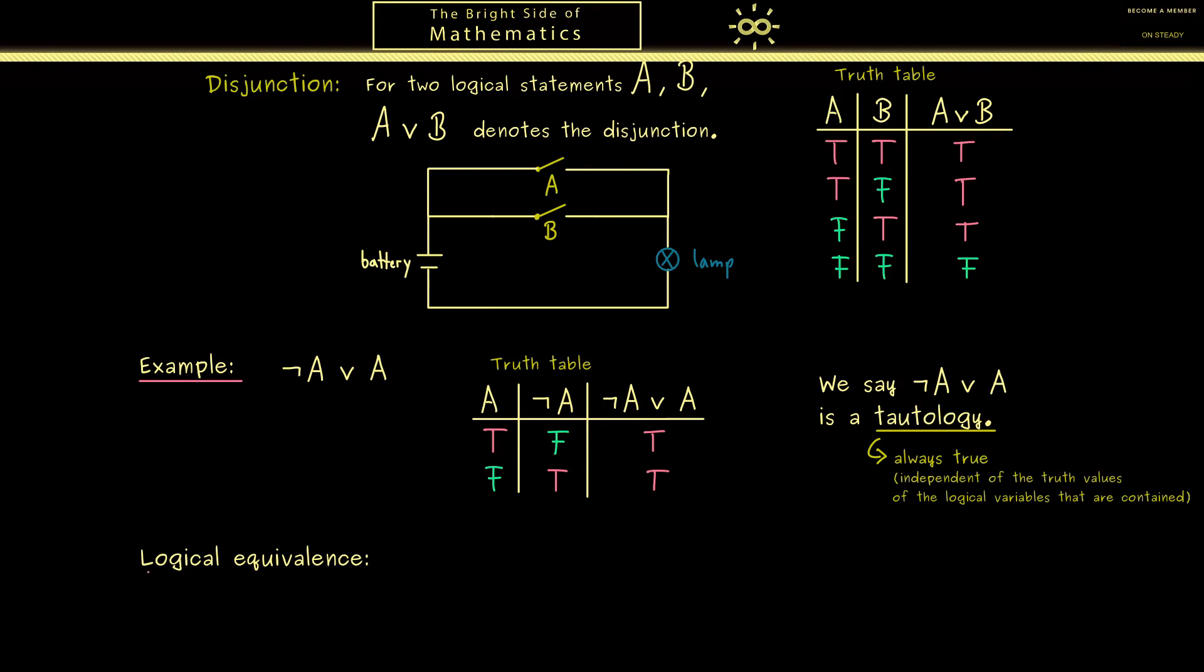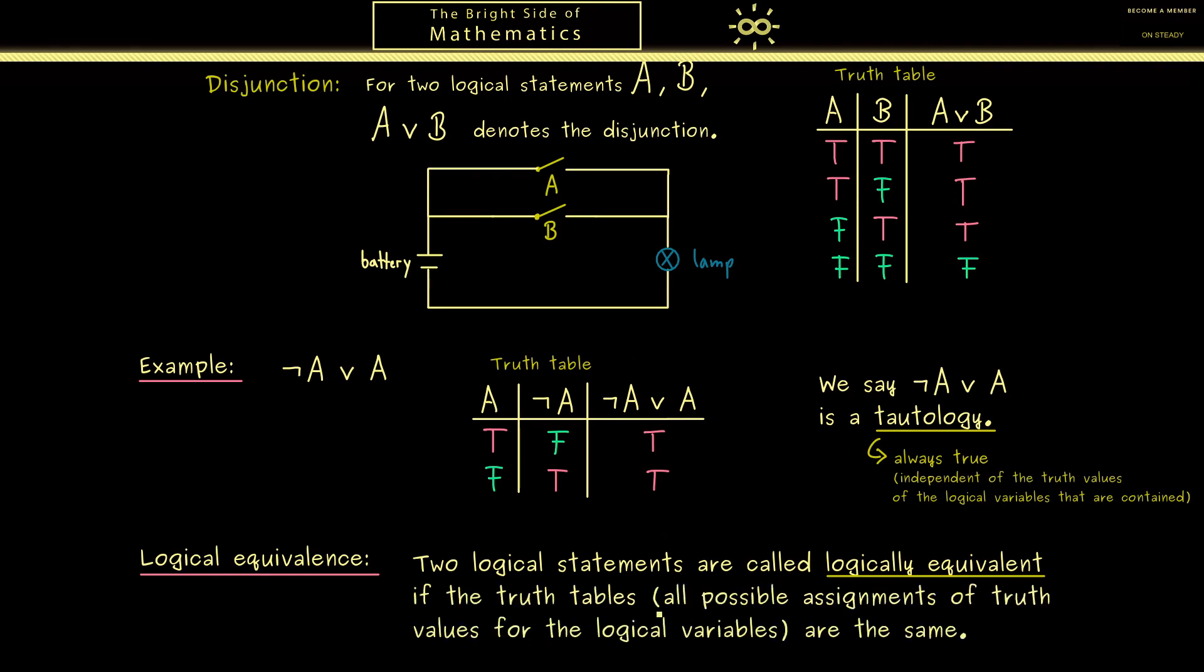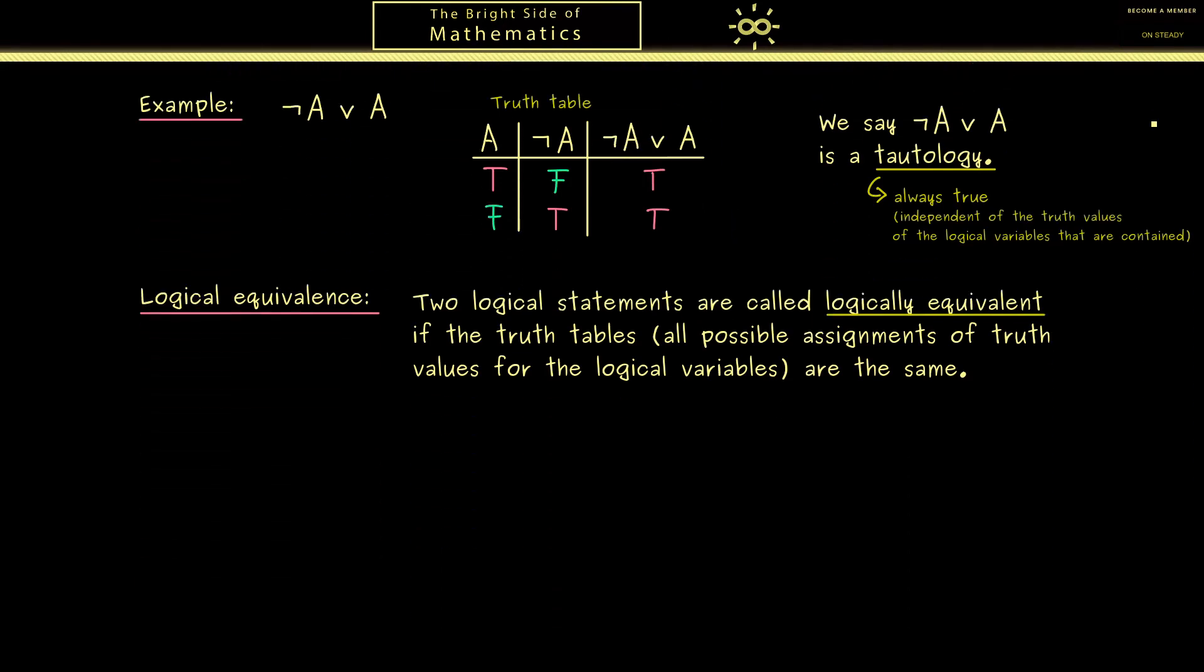Related to that is the notion of logical equivalence. It also tells you when you can substitute one formula with another. We call two logical statements—combinations as we had before—logically equivalent if the truth table looks the same for both. More concretely, you have to look at all possible assignments of truth values for the logical variables that are included in both formulas. If you get the same output for both formulas, we call them logically equivalent.